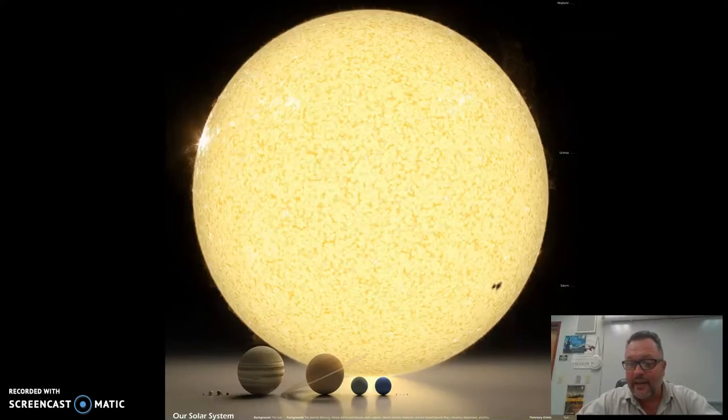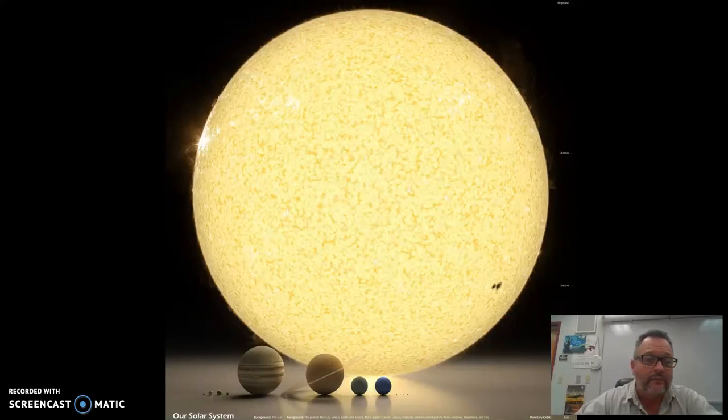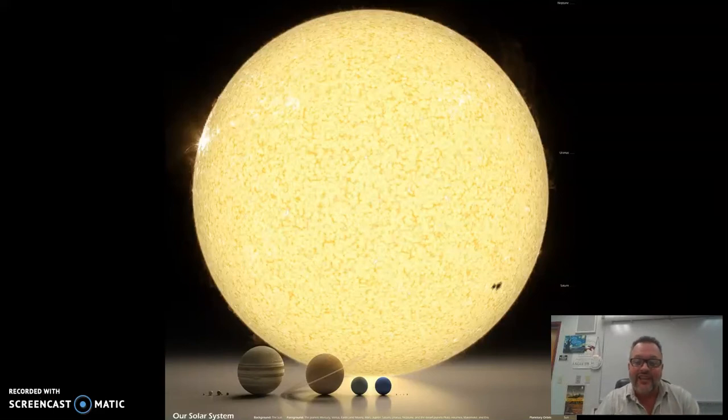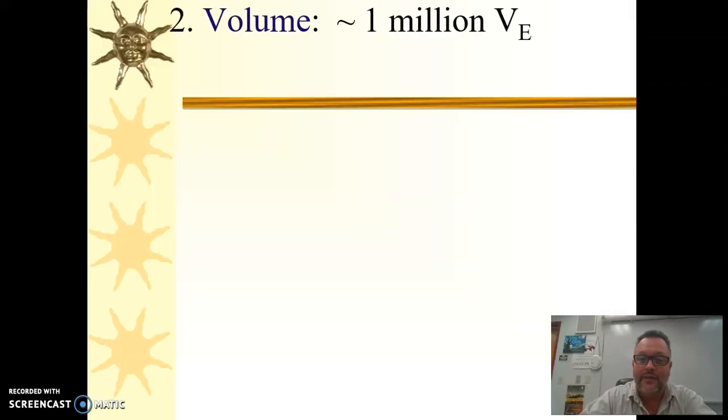That's in terms of diameter. If we assume the sun is a perfect sphere, the volume of a sphere is four thirds pi r cubed. So if you take that 110 and cube it, it gives you an idea of how many Earths would fit inside the sun. And it's a pretty crazy number. A hundred cubed is a million. So yes, over a million Earths would fit inside our sun. It's just mind-boggling.